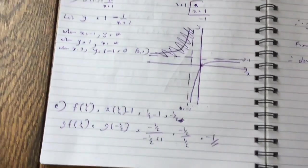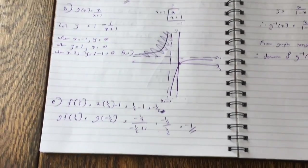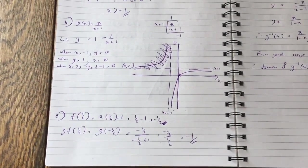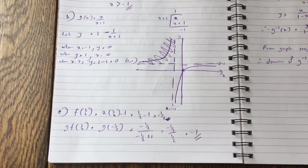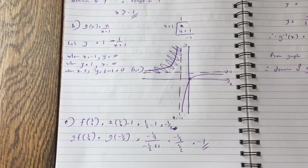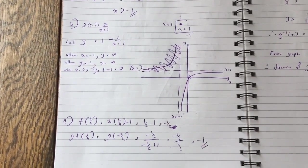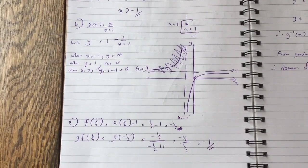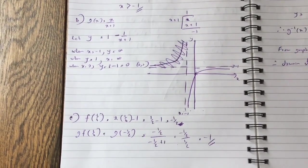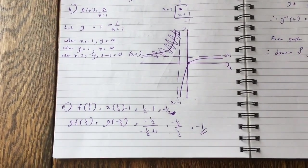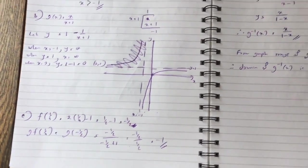Now fg(f(1/4)): first work out f(1/4) = 2(1/4) − 1 = −1/2. Then g(f(1/4)) = g(−1/2) = (−1/2)/(−1/2 + 1) = −1.